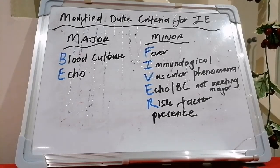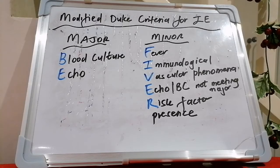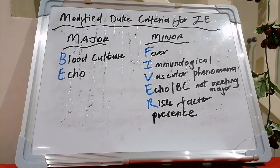In terms of prophylaxis for endocarditis, it's only given to those undergoing an at-risk procedure — for instance, dental procedures requiring manipulation of the gingival or periodontal region of the teeth or perforation of the oral mucosa. Those at highest risk include patients with prosthetic valves, those who had a previous episode of endocarditis, and those with congenital heart disease.